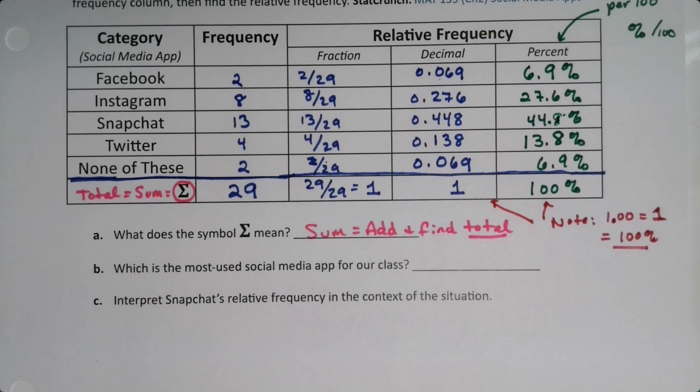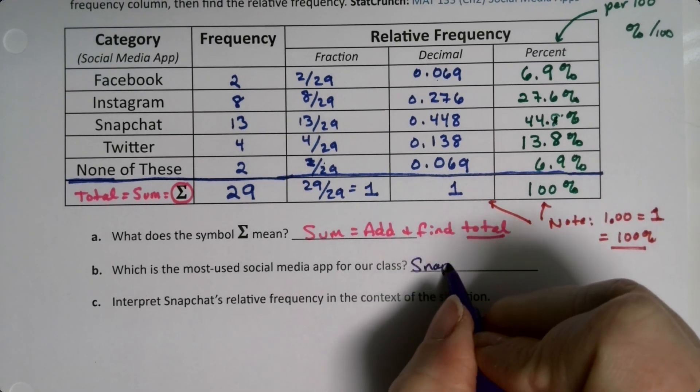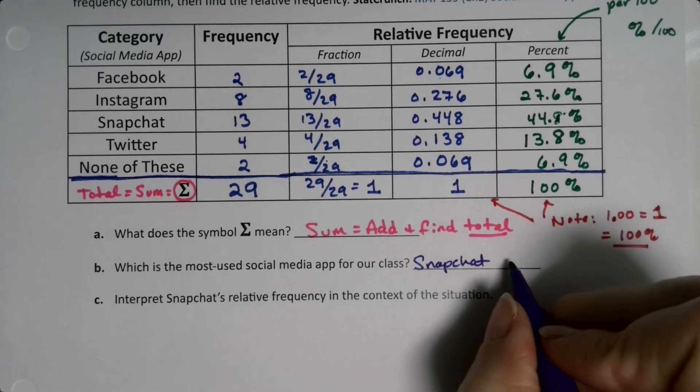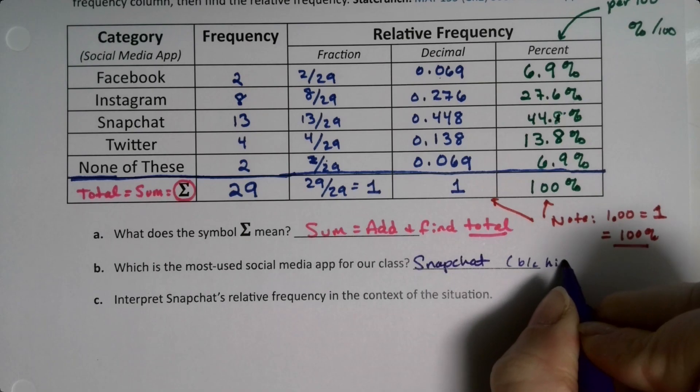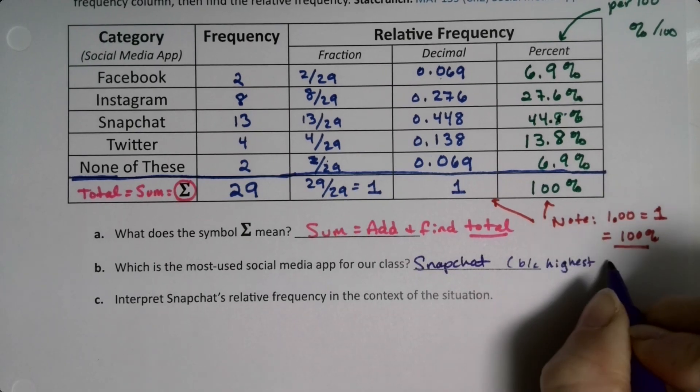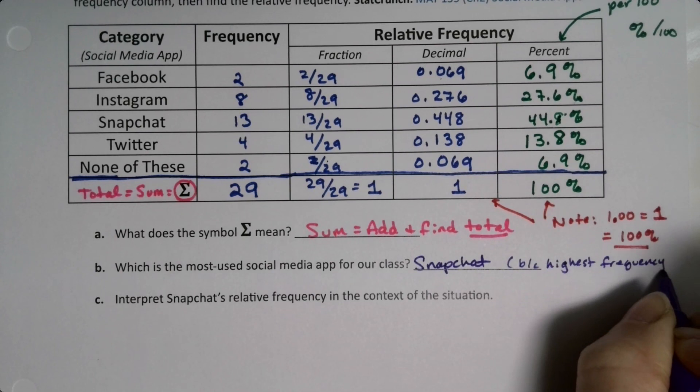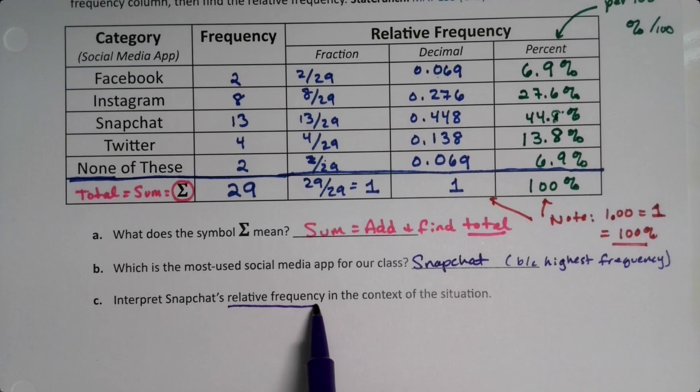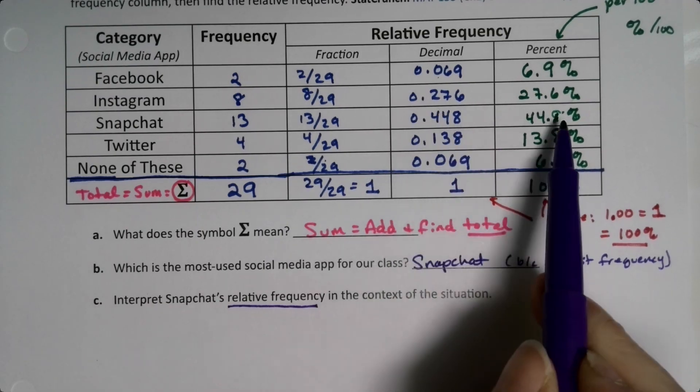All right. Which was the most used social media app for our class? Well, it was Snapchat. Snapchat had the highest frequency. And it has the highest frequency. That's how we know it's the most used. Just in case you're wondering. And then interpret Snapchat's relative frequency in the context of the situation. Okay, no problem. So if I'm looking at Snapchat, and I want to do the relative frequency, the relative frequency is the decimal or percent. Technically, it's also the fraction, but that's not really good for interpretation.